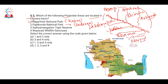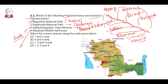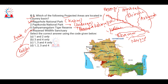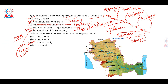Satyamangalam Tiger Reserve is located on the Bhavani River in Tamil Nadu's Erode district. Wayanad Wildlife Sanctuary is also located in the Cauvery basin. Papikonda is in the Godavari basin, not the Cauvery basin. The Bhavani is a tributary of the Cauvery, so the correct answer includes protected areas 1, 3, and 4 — options one, three, and four.